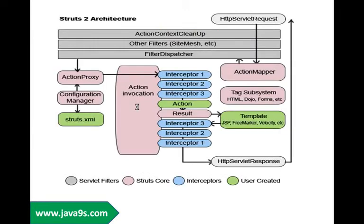Let us take a detailed look at the Struts2 architecture. Once a request lands at the application, the filter dispatcher takes control and based on the configuration, the action will be invoked. It is the action invocation which is responsible for invoking all the interceptors before the actual action is given responsibility. Once the action decides on what kind of result needs to be displayed, the result will be built and again the interceptors configured in the path will be invoked and the response will be sent back to the client.